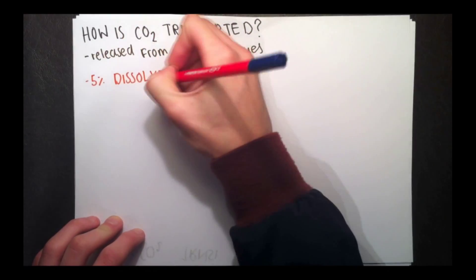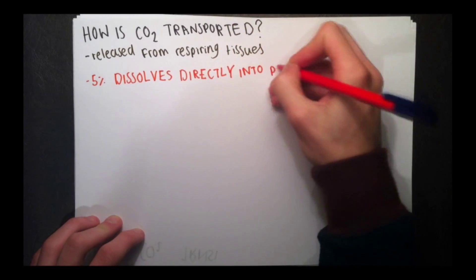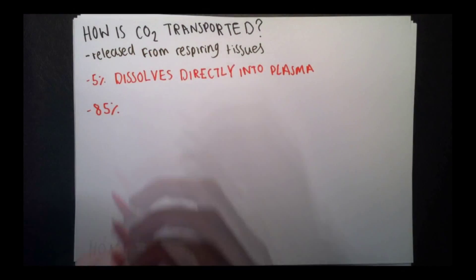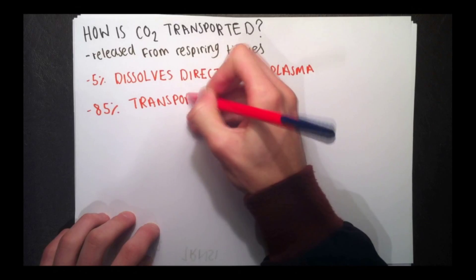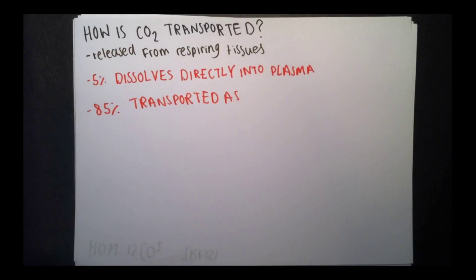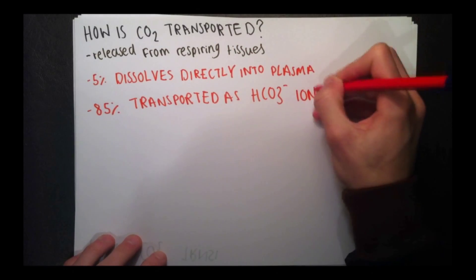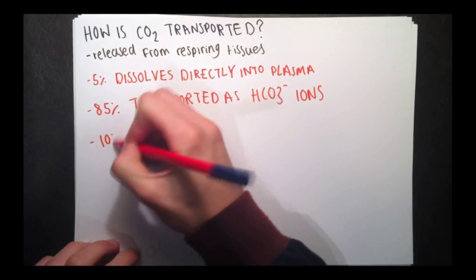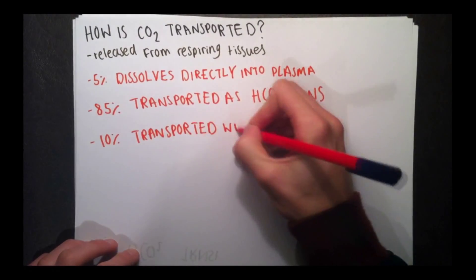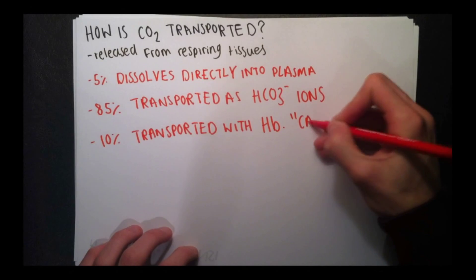Around 5% of the CO2 is directly dissolved into the plasma. Around 85% of the carbon dioxide is transported as HCO3- ions, which are hydrogen carbonate ions. This is what we'll be talking about today. The remaining 10% combines with haemoglobin to form carbaminohemoglobin.